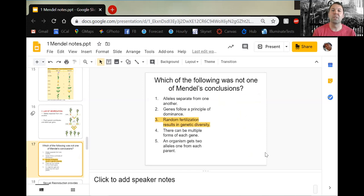Here's a quiz question. Which of the following was not one of Mendel's conclusions? He figured out alleles, dominance, and inheritance. He didn't know about random fertilization as much, which we'll get to later.